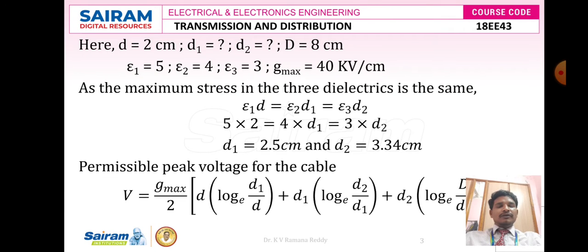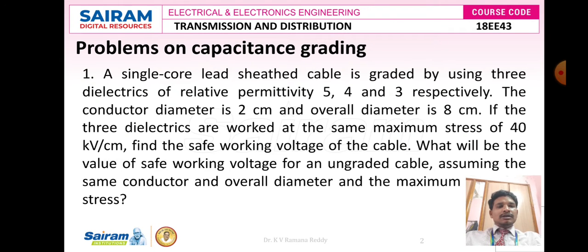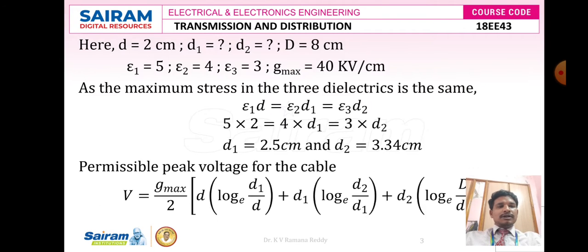Looking at the problem, the given data is very clear. Epsilon r values are 5, 4, and 3. That is epsilon 1 is 5, epsilon 2 is 4, and epsilon 3 is 3. The maximum electrical stress is given as 40 kV per cm.